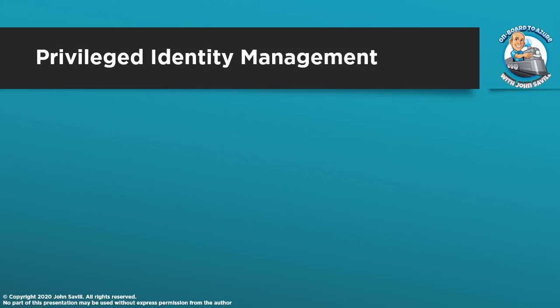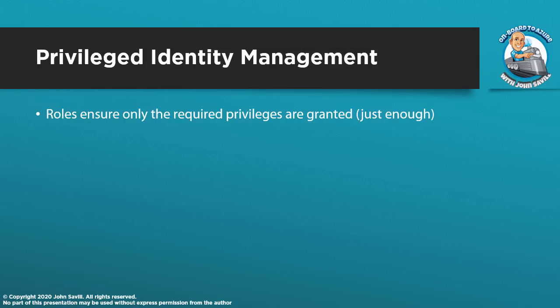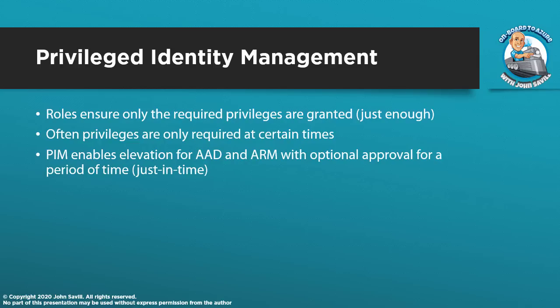The next part, beyond giving people just enough permissions, is giving those permissions only when they actually need them. Roles ensure we give people just enough, but typically they're not using elevated permissions all the time. They do a certain activity requiring elevated permissions, and ideally we don't want to let them have those permissions all the time. They can accidentally do bad things, and if elevated, those bad things can be far more severe. PIM — Privileged Identity Management — enables this elevation for both Azure AD roles and ARM roles as required.